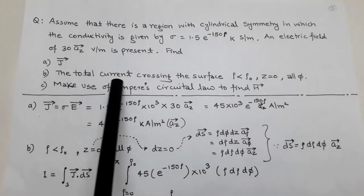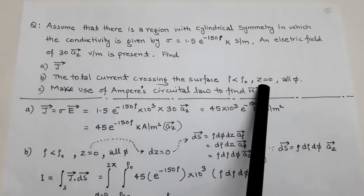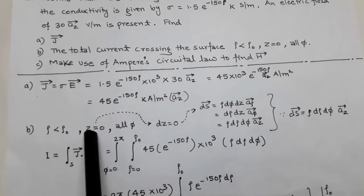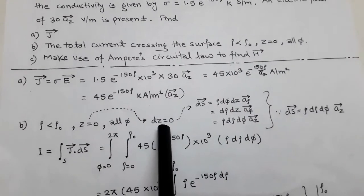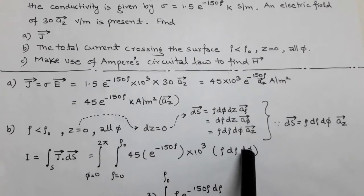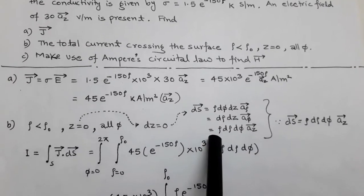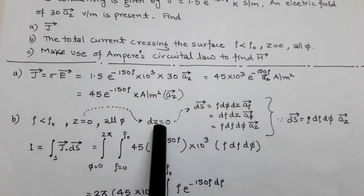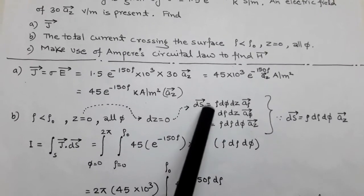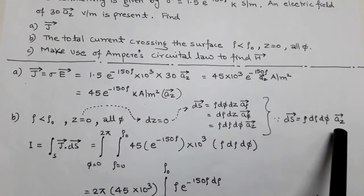For part (b), we determine the total current crossing the surface where ρ < ρ₀, z = 0, and all φ. Since z = 0 is a constant, dz = 0. In cylindrical coordinates the differential surface has components in the ρ, φ, and z directions. Since dz = 0, the first two surface terms vanish and we use only the differential surface in the ẑ direction.